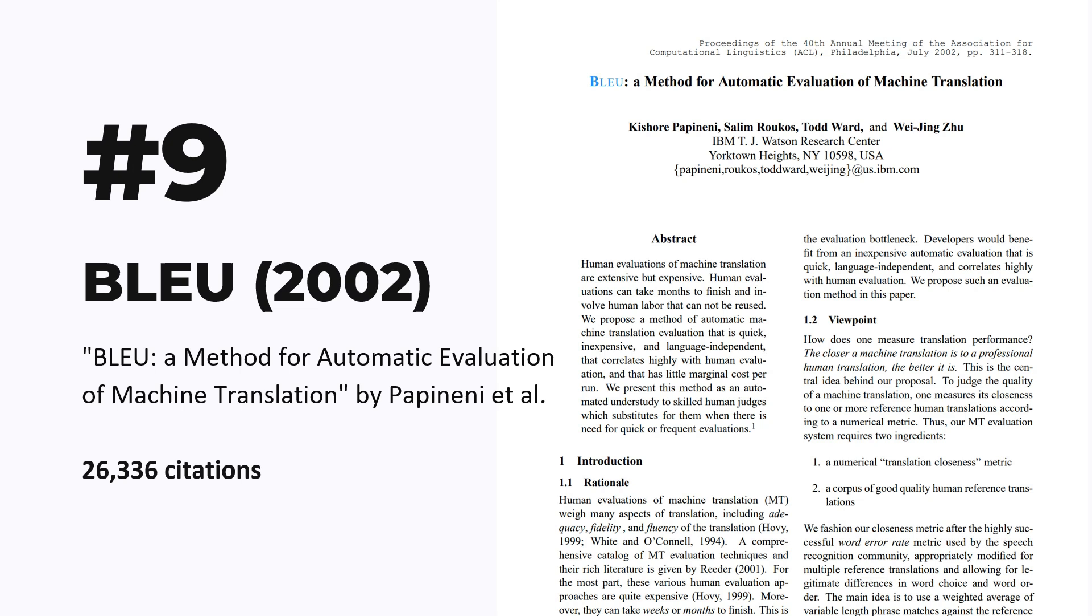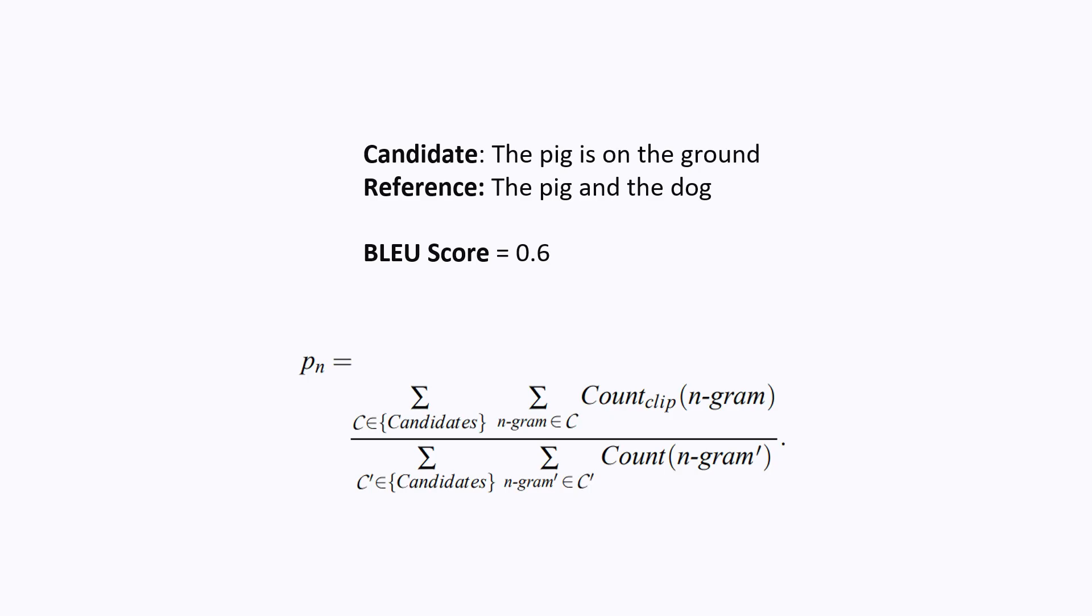Number nine is BLEU, a method of automatic evaluation of machine translation, published in 2002. This paper is kind of different from all the ones we've seen so far. Instead of coming up with a new architecture, this paper proposes an evaluation metric, and it's mostly used for machine translation, but can also be used whenever you're comparing two sentences for how similar they are to each other. For example, if you're given two sentences, then the BLEU score is always going to be a number between zero and one. This is useful for evaluating translation and other types of generation systems.